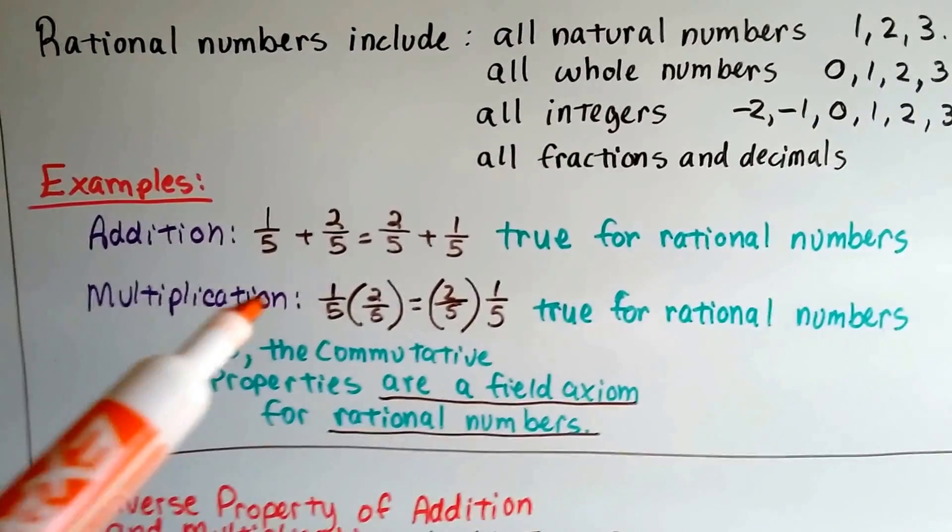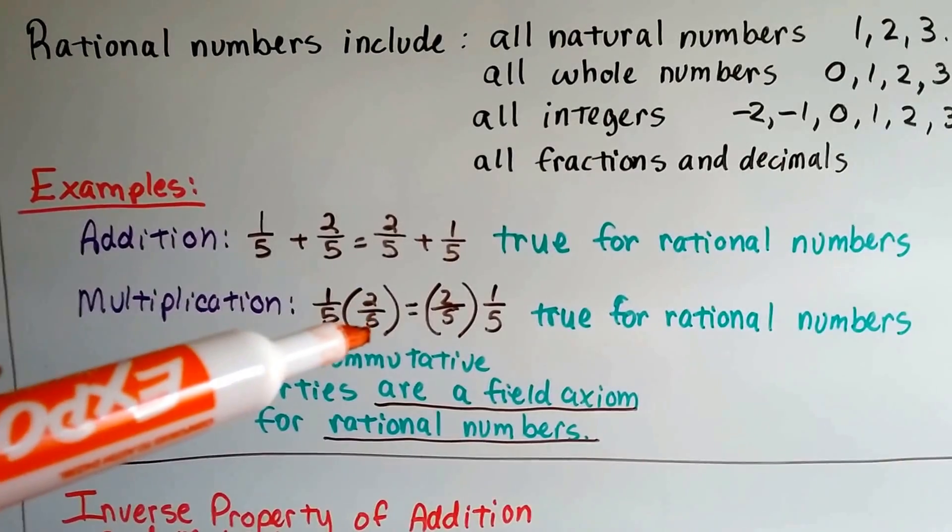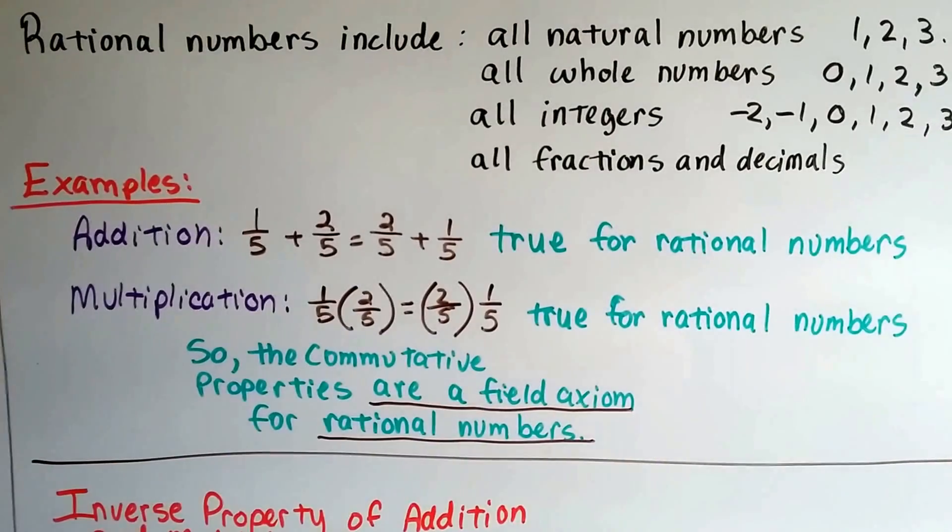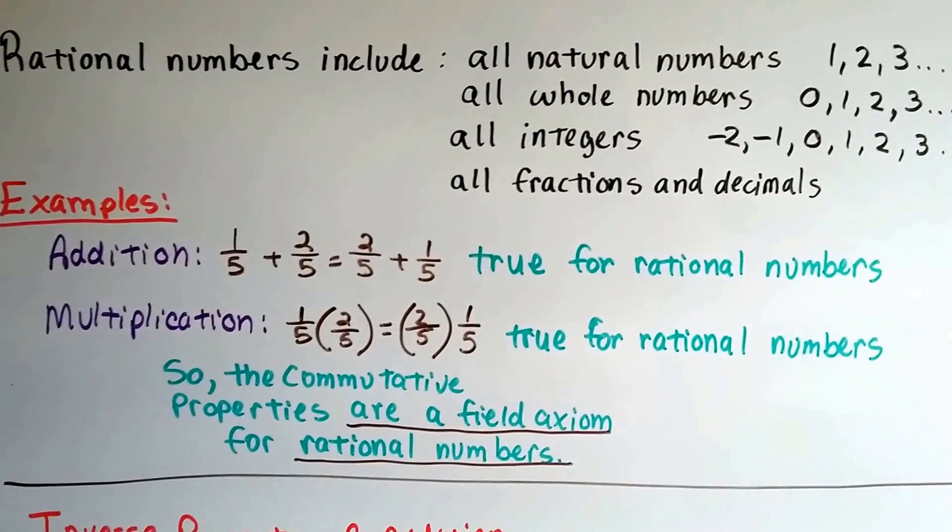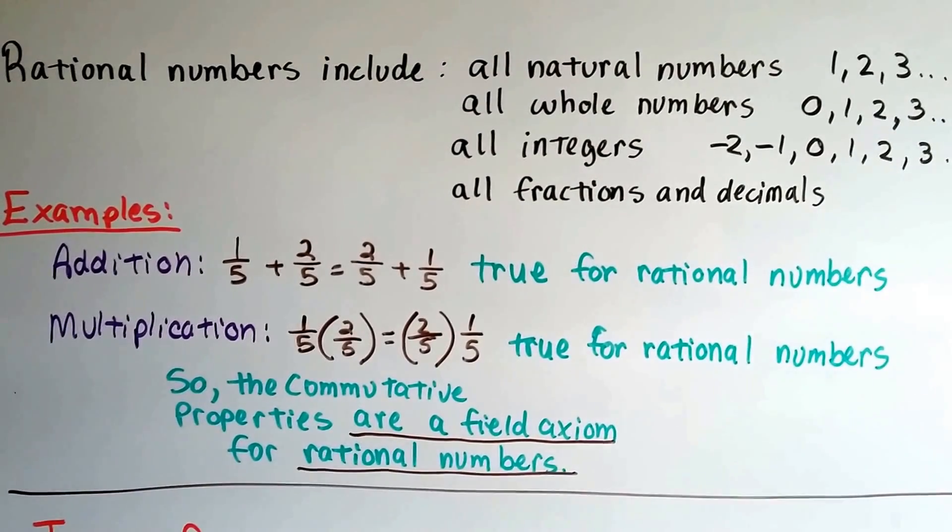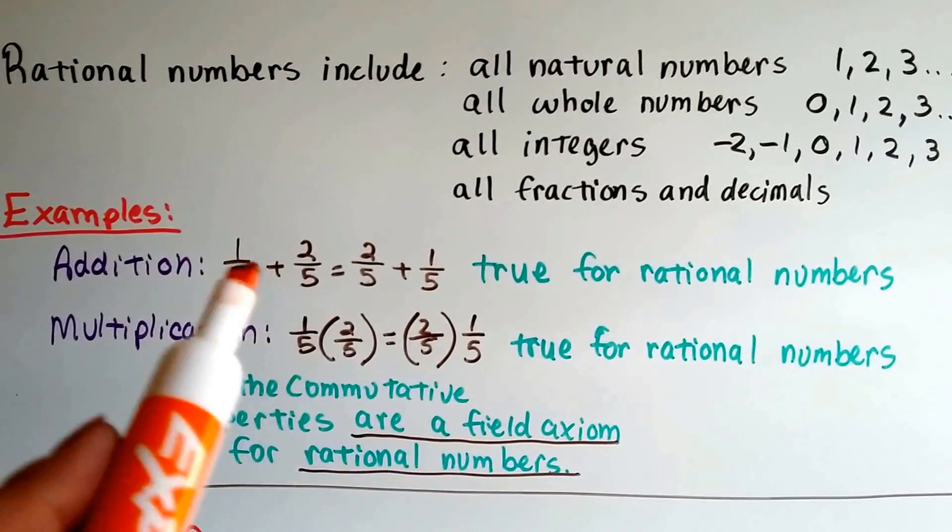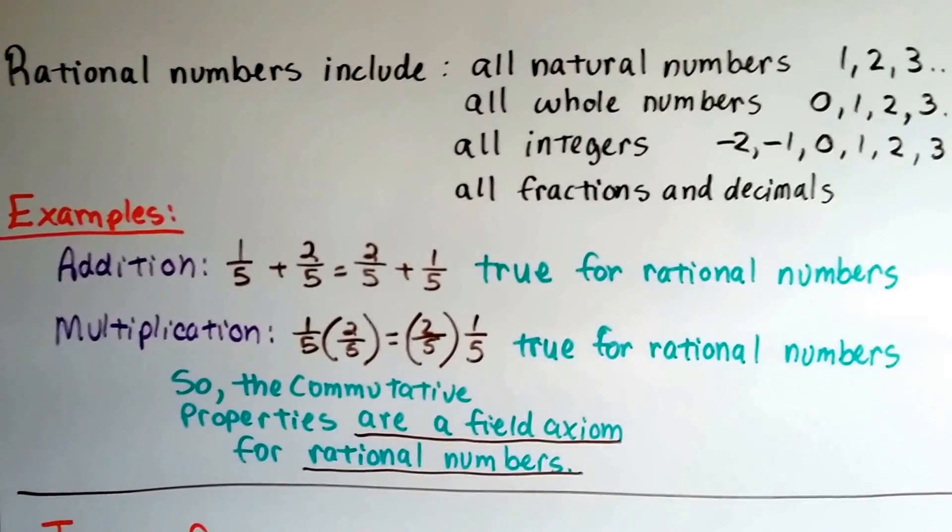And for multiplication, we've got one-fifth times two-fifths. Well, that'll equal two-fifths times one-fifth. So that's true for rational numbers. So the commutative properties are a field axiom for rational numbers because they're true. See? It fits. It works.